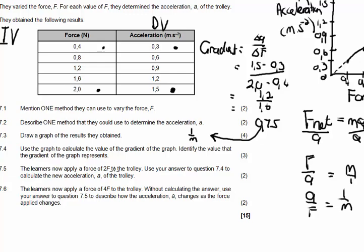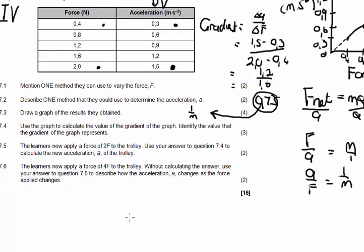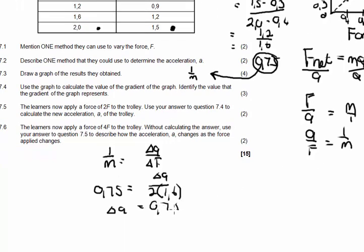Now, if the learner applies a force of 2f to the trolley, calculate the new acceleration. So what we can now do is say, if 1 over m is a constant, I can use that in the next calculation. I can say that 1 over m is actually equal to changing a over changing f. And I'm going to use 1 over m now, a value of 0.75. And then changing a is now my unknown. I used to have 1.6 as my changing f. So now I'm going to use 2 times f, which is 2 times 1.6. If I want to go and calculate the change in a, it's going to be equal to 0.75 multiplied by 2 times 1.6, which is actually 3.2. So 3.2 times 0.75 gives me 2.4. So my acceleration is 2.4 meters per square second.